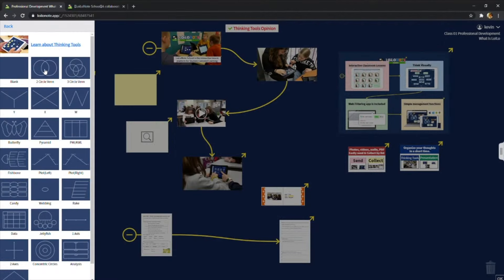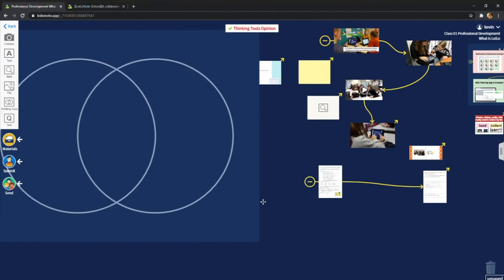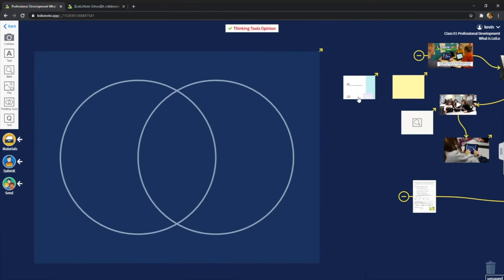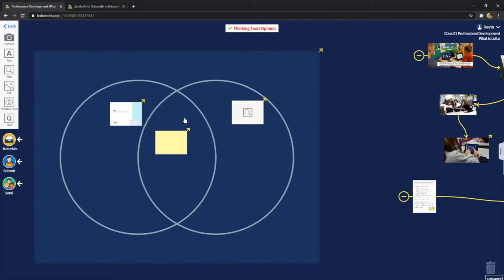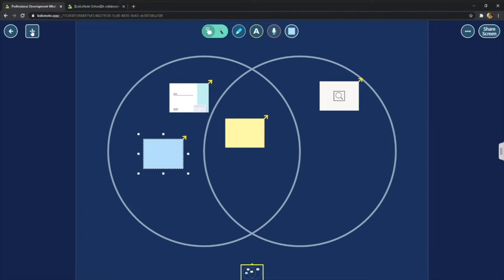Select a thinking tool from the tray. Add cards of your own thoughts. Connect the cards to explain your thoughts. Your presentation will be complete.